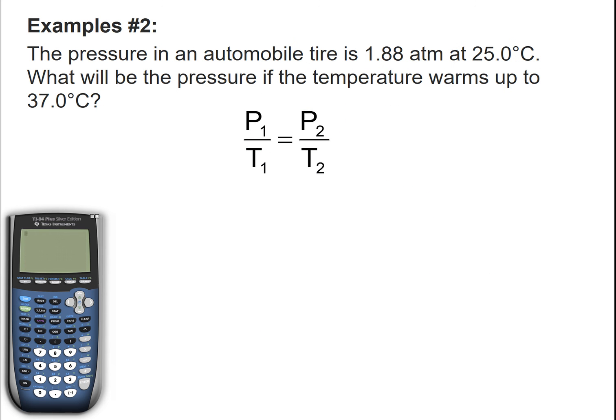Example number two. The pressure in an automobile tire is 1.88 atm at 25 degrees Celsius. They want to know what will be the pressure if the temperature warms up to 37 degrees Celsius. So they want to know the new pressure.